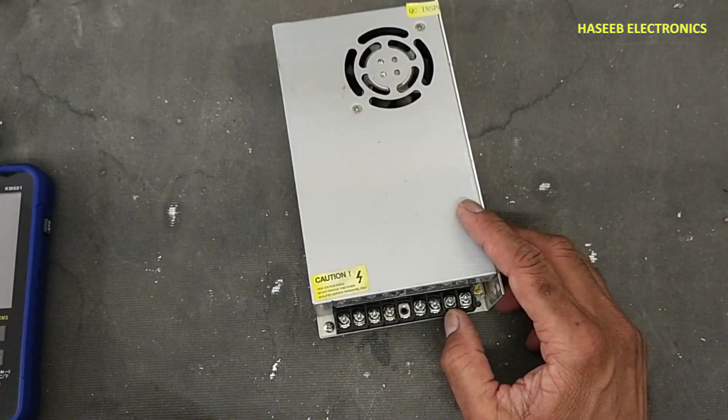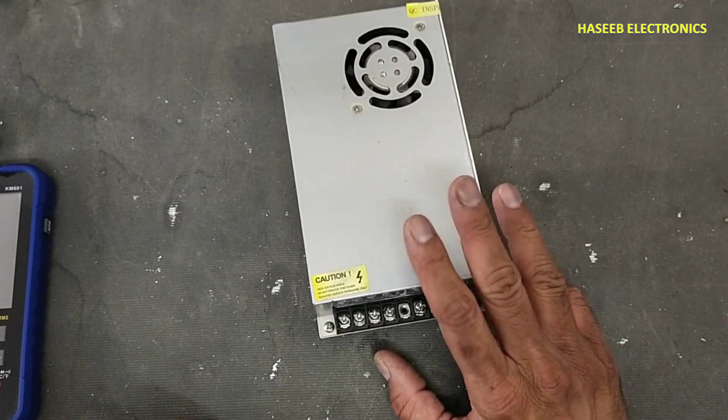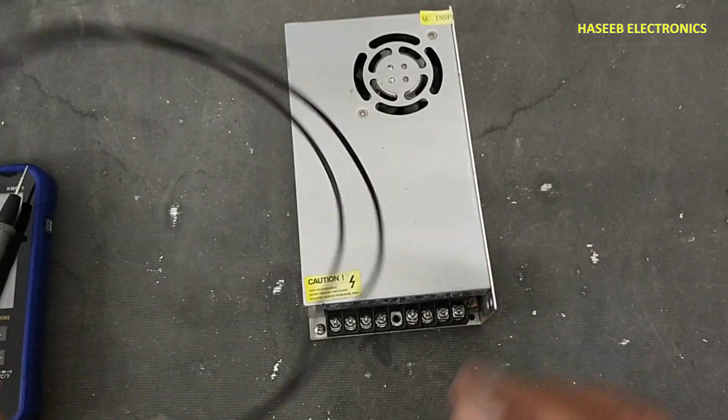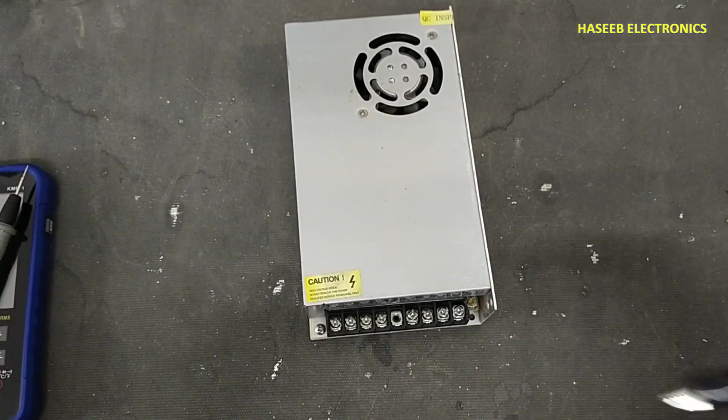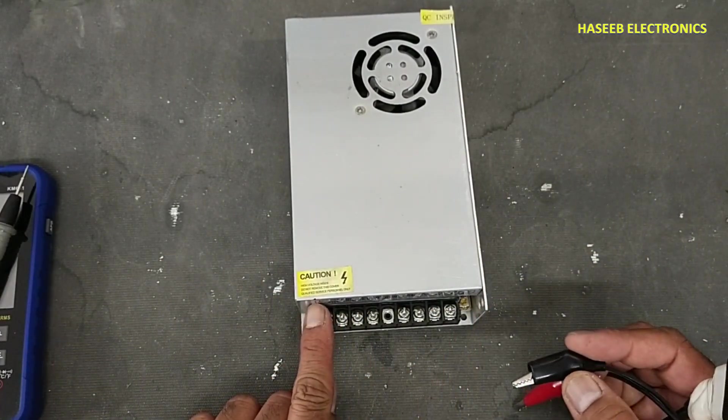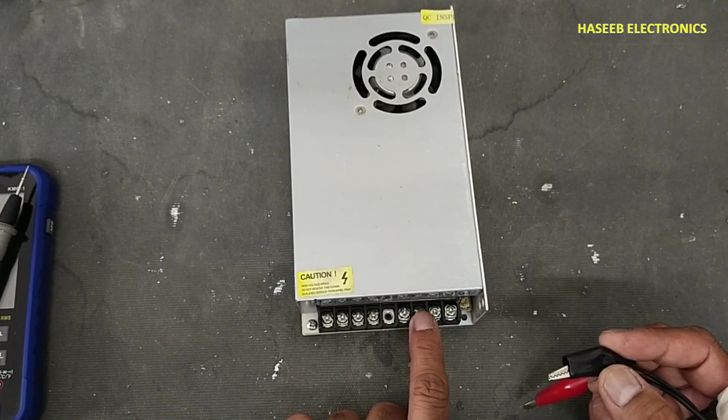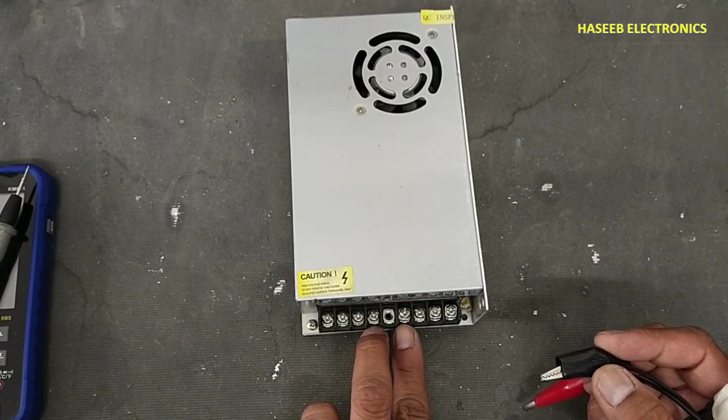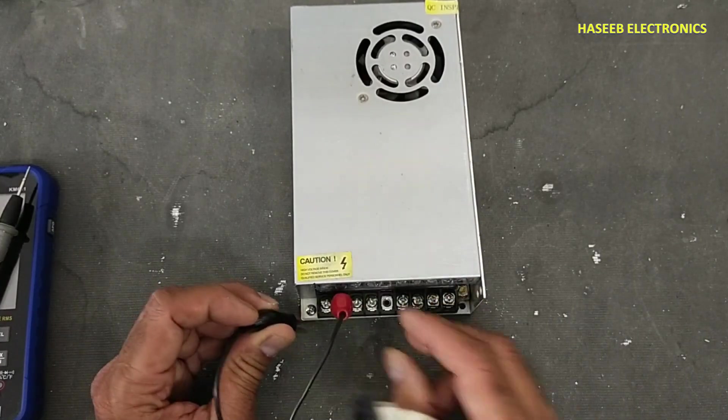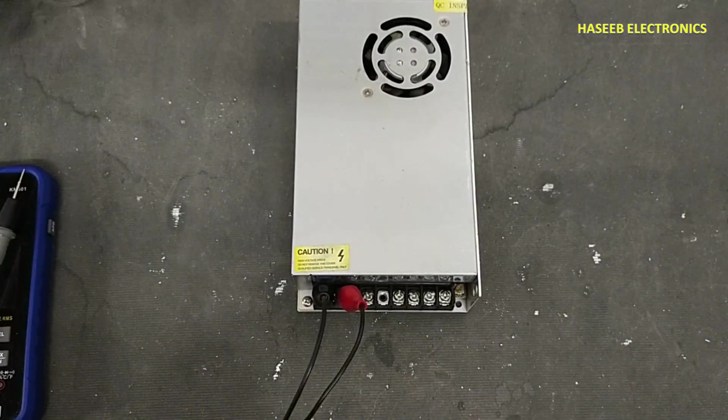If you don't have good practical experience in power electronics, never try to repair because it has unisolated live electrical voltage. Let's check it. The left two pins are line and neutral, and the right three pins are positive voltage. These three pins are common and this is ground pin. We will use series lamp to apply power and see this lamp condition.